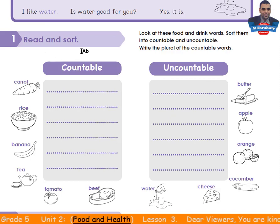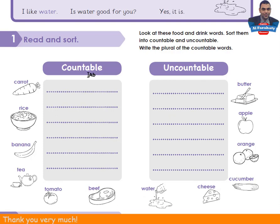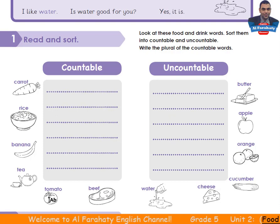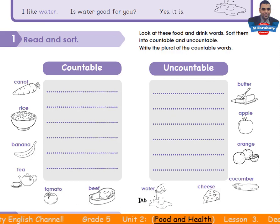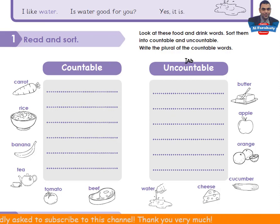Activity 1 — Read and sort. Look at these food and drink words and sort them into countable and uncountable. Write the plural of the countable words. The words are: carrot, rice, banana, tea, tomato — note that the British pronunciation is 'tomato', the American is 'tomato' — beef, water, cheese, cucumber, orange, apple, butter. Take your time to sort these words, then come back to check your answers.